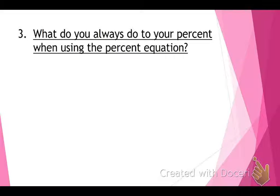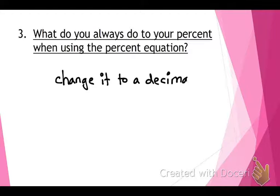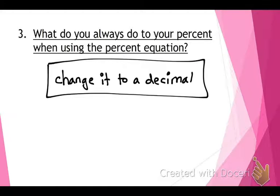What do you always do to your percent when using the percent equation? We just had the percent equation, P times of equals is. What do you do to your percent? Change it to a decimal. If you don't change it to a decimal, you will not get the right answer. So make sure you always change it to a decimal first, and then you can multiply P times of equals is.